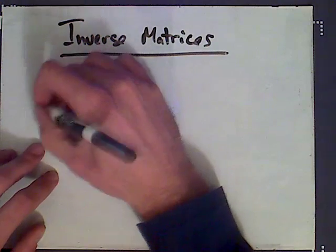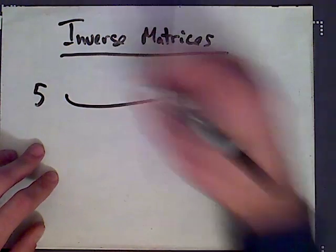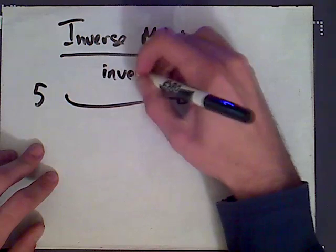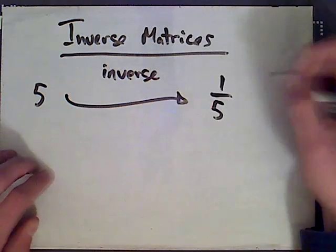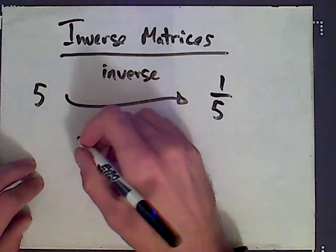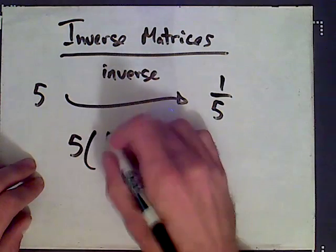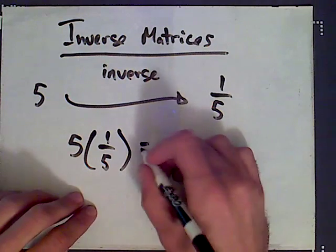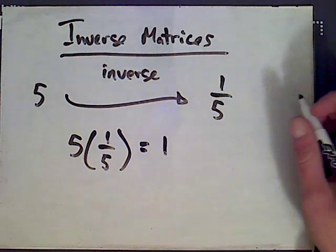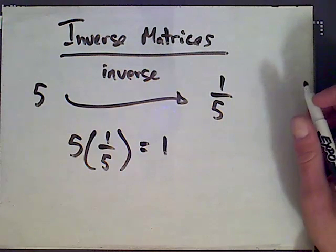So let's say we have the number 5. What's the inverse? The inverse of 5 is 1/5, and this pair of numbers has the property that 5 times its inverse 1/5 equals 1. This is what we mean by the inverse of a number.